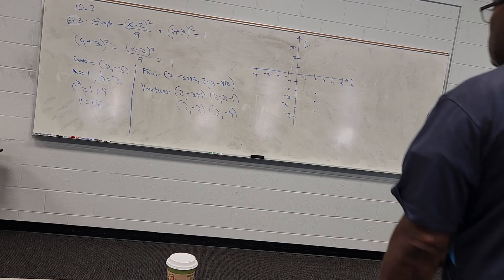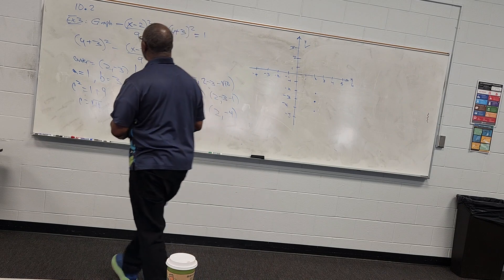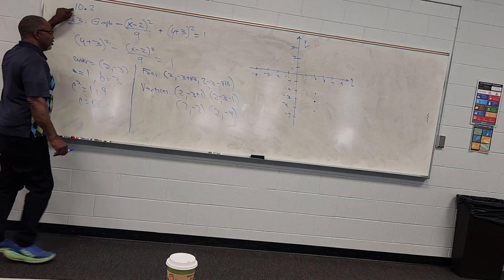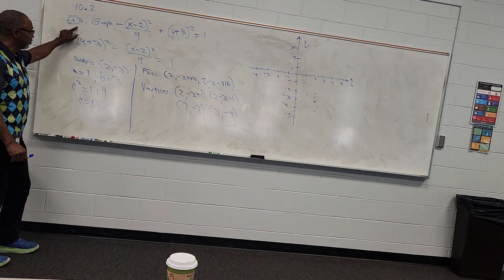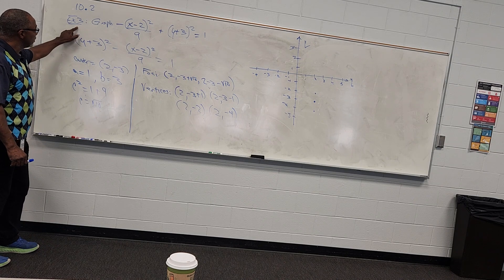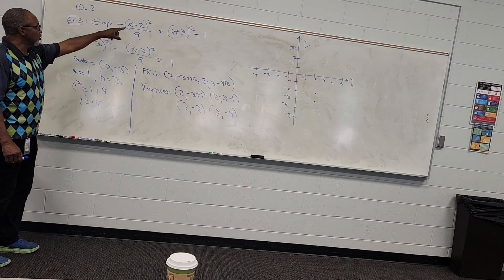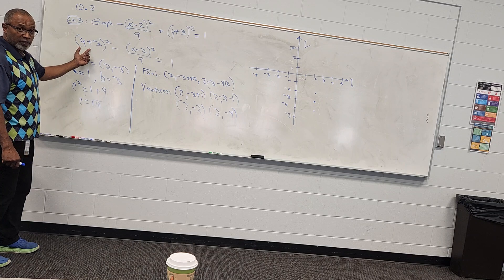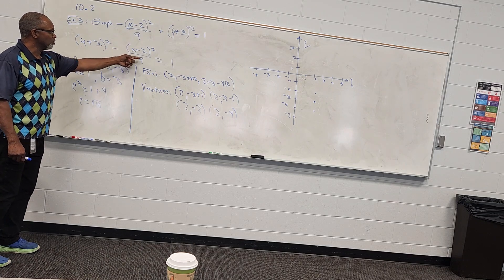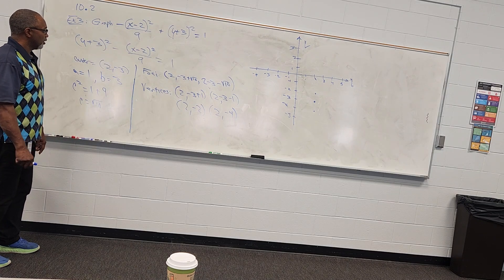All right, we are continuing in section 10.2. We were working on example 3 when I stopped the last video. It was negative x minus 2 squared over 9 plus y plus 3 squared. We turned it around. We got y plus 3 squared minus x minus 2 squared over 9, all equals 1.